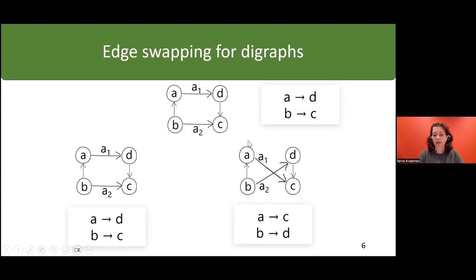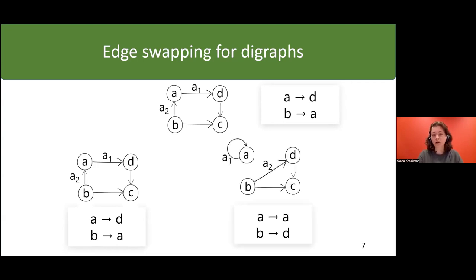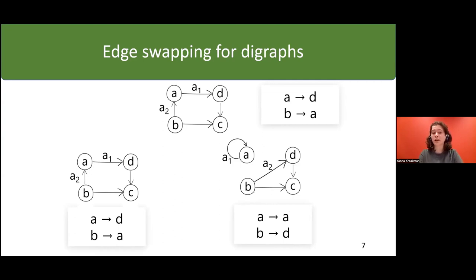If picking a certain pair of edges leads to a self-loop with probability one-half, and we want simple graphs, then we decline that outcome — we undo the swap and go back to the original graph with probability one. So for that specific pair of edges, with probability one-half we get the new graph, and with probability one-half we return to the original state.